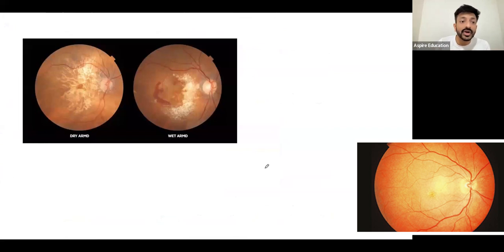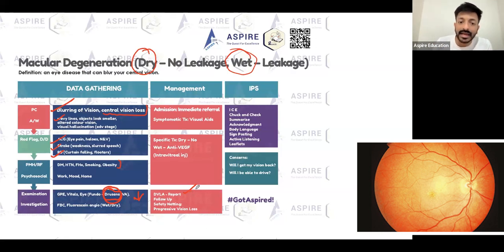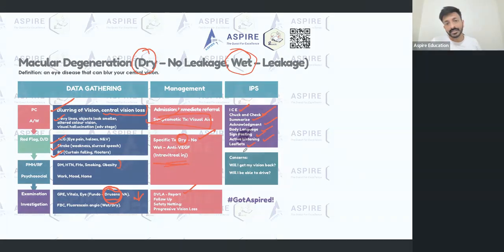To summarize macular degeneration: key features are wavy lines, objects look smaller, and drusens on fundoscopy. Dry ARMD has no leakage and no specific treatment; wet ARMD has leakage and requires intravitreal injections. Symptomatic treatment is visual aids. Inform DVLA. For the IPS framework, remember: eyes, check, summarize, acknowledgement, body language, signposting, active listening, and offer leaflets to your patient.